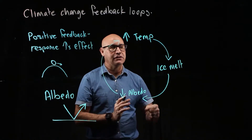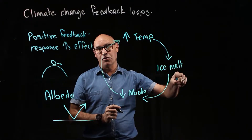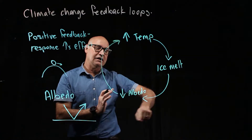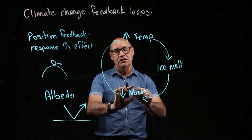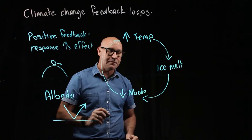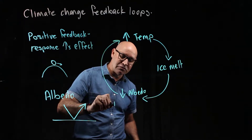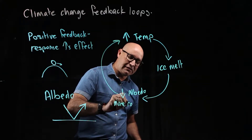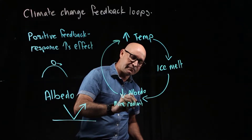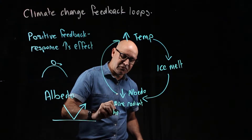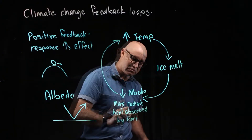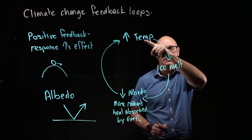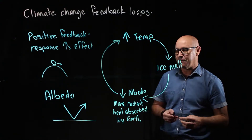It's a positive feedback loop because as temperatures increase there's more ice melt, there's reduced albedo, and there's increased temperatures — it continues on like this. Decreased albedo means more radiant heat is absorbed by the earth, the earth gets warmer, and the cycle continues. Positive feedback loop.